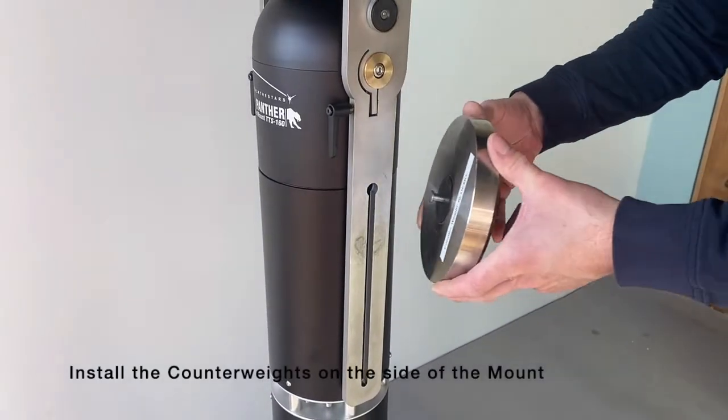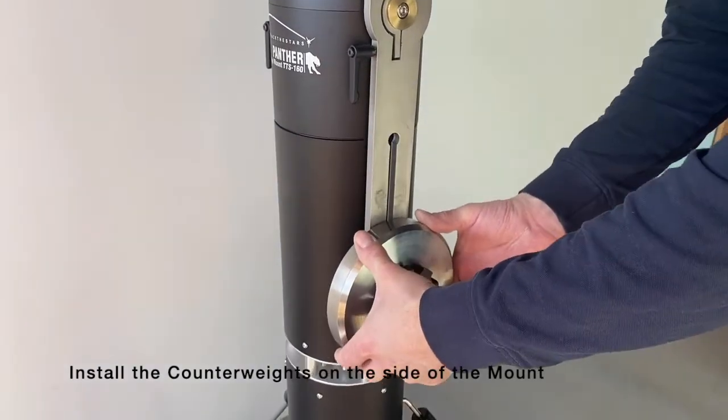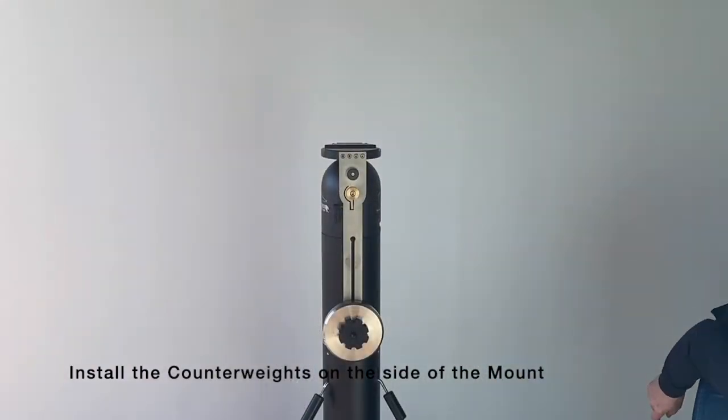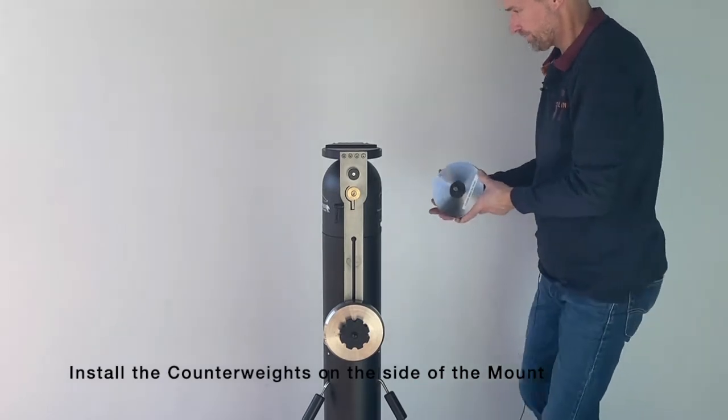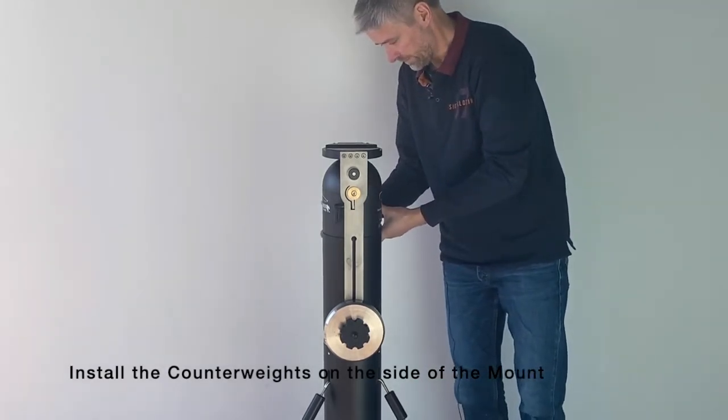Install the counterweights. Insert the small axle into the slot on each of the counterweight arms. Let the counterweight slide all the way to the bottom.